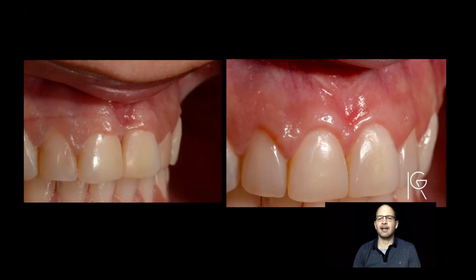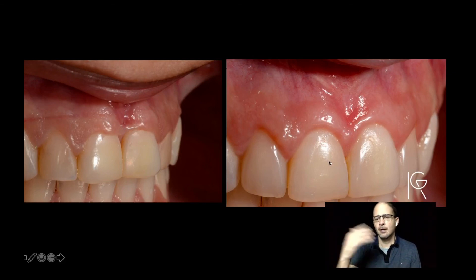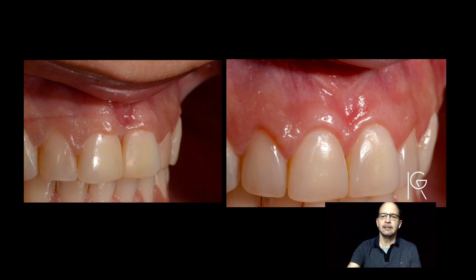And then you have results like that. This frenum was affecting the papilla — I already removed this frenum. Look at the tooth proportion already in place as a result of the two proportional gauge. And here's the final patient before and after with a simple surgery of 40 to 45 minutes with only one instrument.